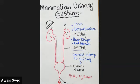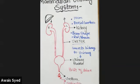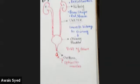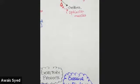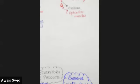So the left kidney is slightly above and the right kidney is slightly below because of the liver's lobe. Keep that in mind when you look at the diagram. Now we will study the kidney structure in detail.